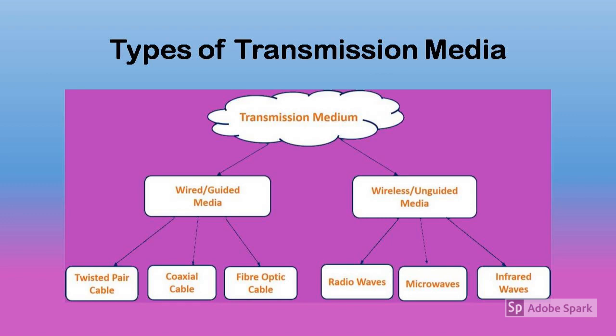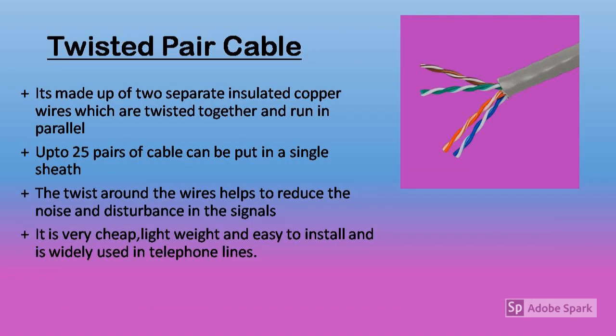We basically have two types of transmission media: wired and wireless. Wired transmission media can also be called guided or bound transmission media, and wireless can be called unguided or unbound. Under wired transmission media we have twisted pair cable, coaxial cable, and fiber optic cable. Under wireless we have radio waves, microwaves, infrared waves, Bluetooth, communication satellite, and Wi-Fi.